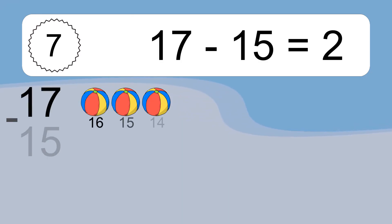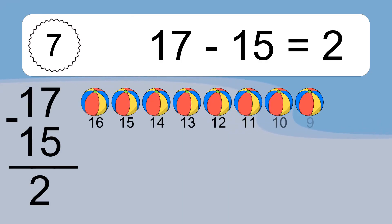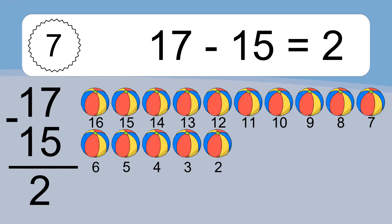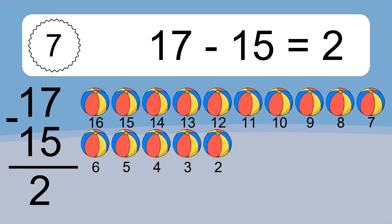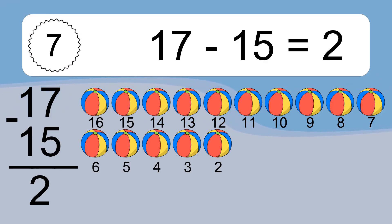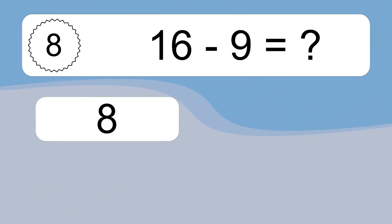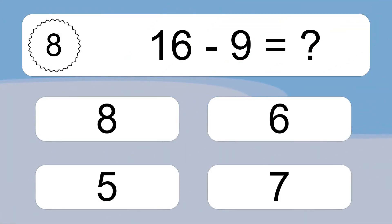17 minus 15 equals what? 17 minus 15 equals 2. Let's count it: 16, 15, 14, 13, 12, 11, 10, 9, 8, 7, 6, 5, 4, 3, 2.